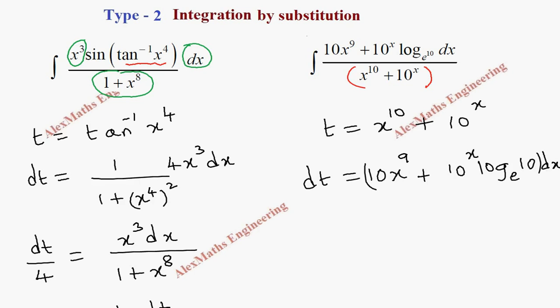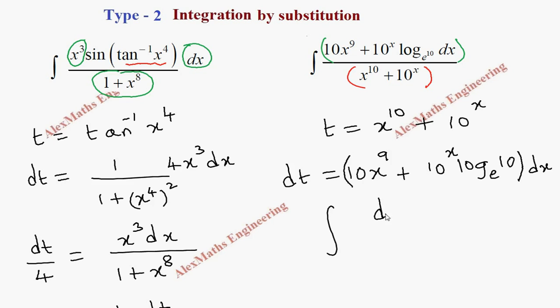So totally we got the entire numerator itself. So this can be replaced as dt. So integration of dt and denominator is t, which is nothing but log t plus c.